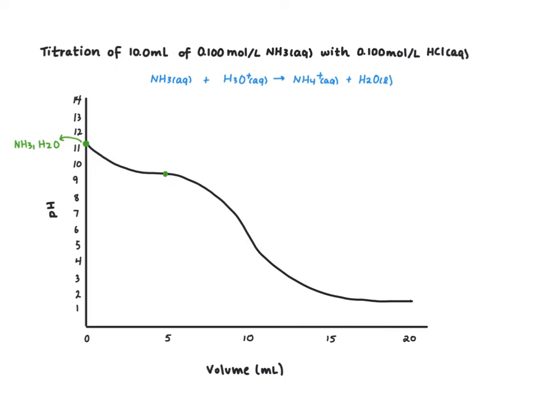The half-equivalence point is here. At our half-equivalence point we have equal concentrations of ammonia and ammonium, so we've turned half of our ammonia into ammonium.